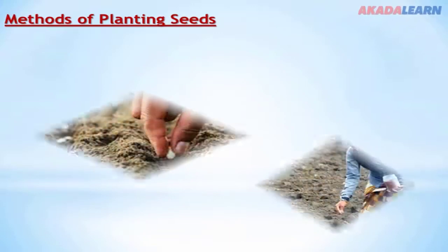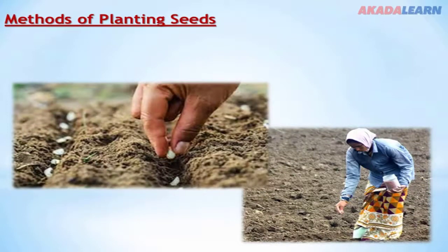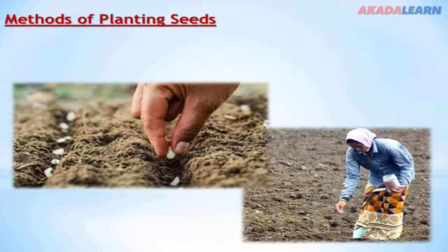Methods of planting seeds: we have basically two types. The first one is planting in situ, or planting directly into the field. In situ means its original place — the original place of every crop or plant is on the field. In this method, the seed is planted directly into the field. Most seeds planted directly in the field are from annual crops — they grow, develop, and bear fruits within one year or one planting season, and after that they die.